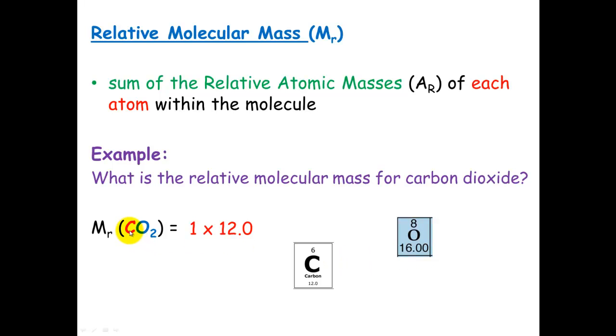So for carbon, we have one carbon atom, and we get the 12, the relative isotopic mass from the mass number on the periodic table. Oxygen, again, there's two oxygen atoms, and we get the relative isotopic mass from the mass number on the periodic table. We add these together. Remember, work out your brackets first, and you get an answer of 44.